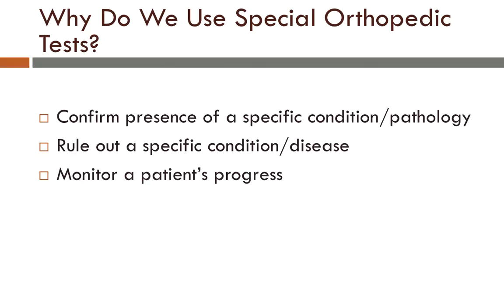After we've performed all other diagnostic testing, we move on to special orthopaedic tests. Why do we use special orthopaedic tests? They are used to confirm the presence of a specific condition or pathology, to rule out a specific condition or disease, and to monitor a patient's progress.